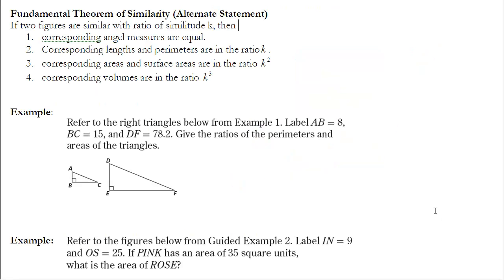An alternate statement of the Fundamental Theorem of Similarity: for any two similar figures, the angle measures will be equal. For any lengths — and perimeters are lengths — the ratio will always be k. For any areas, the ratio will always be k squared. For volumes, the ratio will always be k cubed. Anytime we compare similar figures, we must look at what measurement we're comparing to decide whether to use k, k squared, or k cubed.